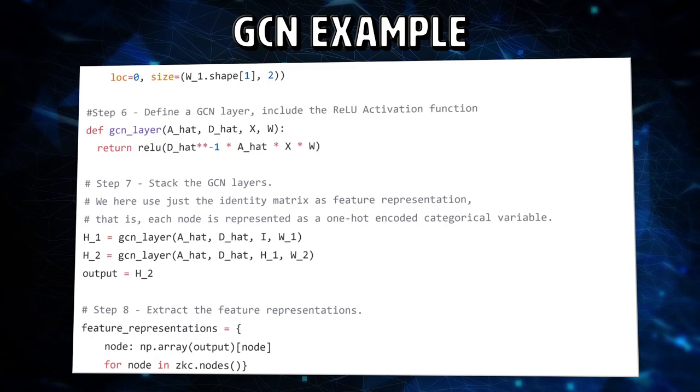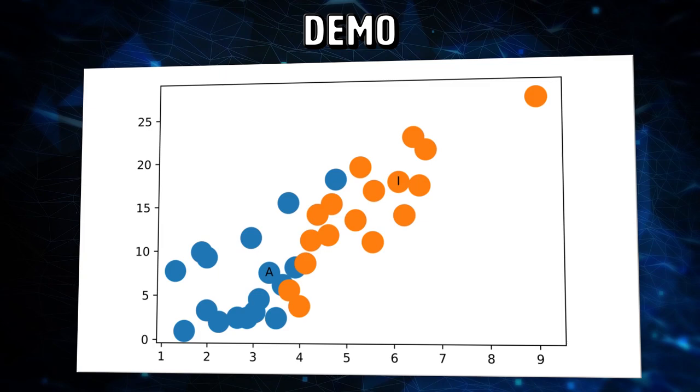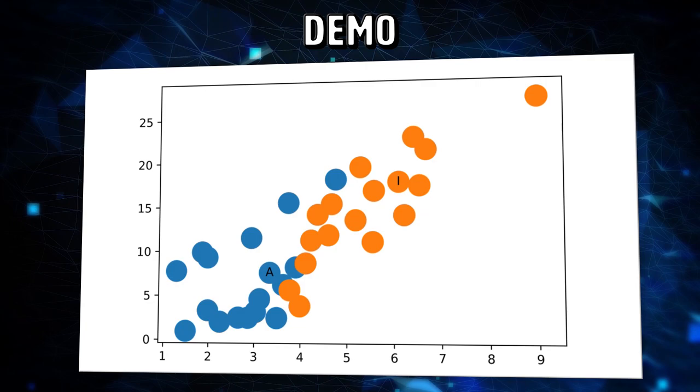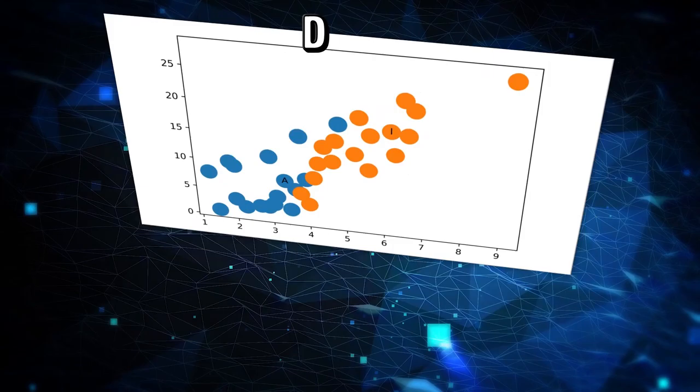This is reminiscent of the convolutional filtering operation from regular convolutional networks, in that the weights are shared across nodes in the graph. We can easily extract the feature representations from the graph and plot it in a few lines. It cleanly separated both sides and we haven't even started the training process yet. If we start training, our output graph will get way more accurate and this demonstrates the power of GCNs.